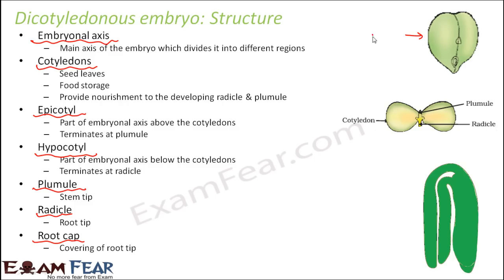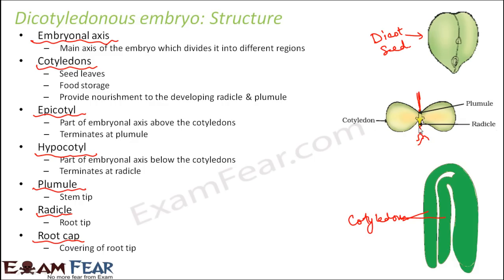Inside the dicot seed you have a small plumule and a small radicle, along with two cotyledons. The entire embryonal axis contains these parts. The cotyledons are the seed leaves used for food storage, providing nourishment to the developing radicle and plumule. The radicle gives rise to the root system and the plumule gives rise to the shoot system — both need energy stored in the cotyledons to grow.